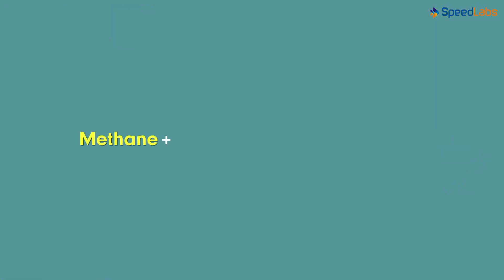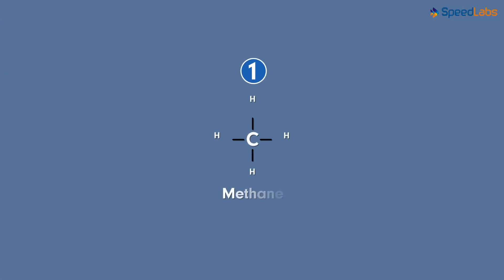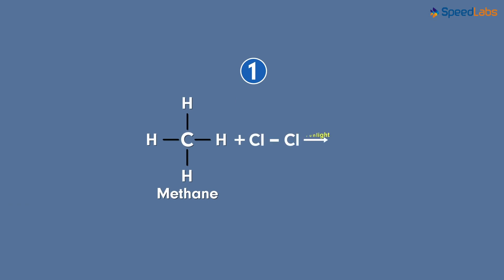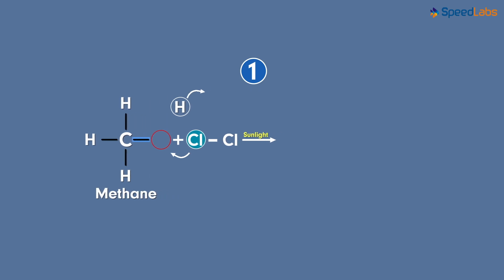The best example to explain this is that of methane, which reacts with chlorine in the presence of sunlight. It gives rise to methyl chloride. The structure of methane is somewhat like this. When chlorine is made to react with it in the presence of sunlight, one hydrogen from methane gets detached. The parting of hydrogen leaves the carbon atom available for bond formation, and this position can be occupied by one chlorine atom.